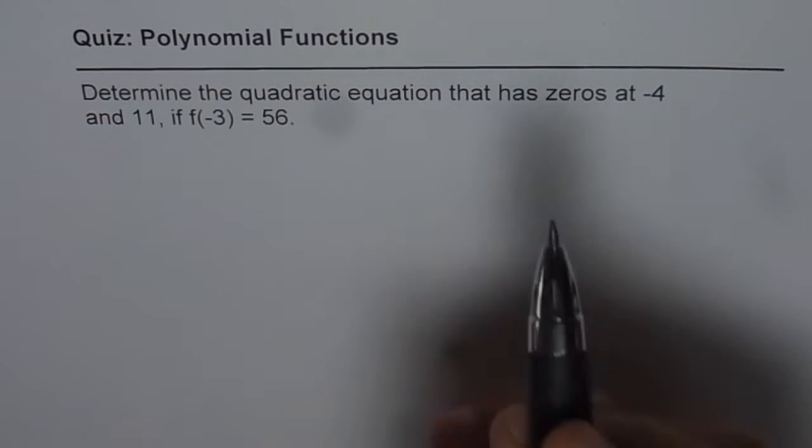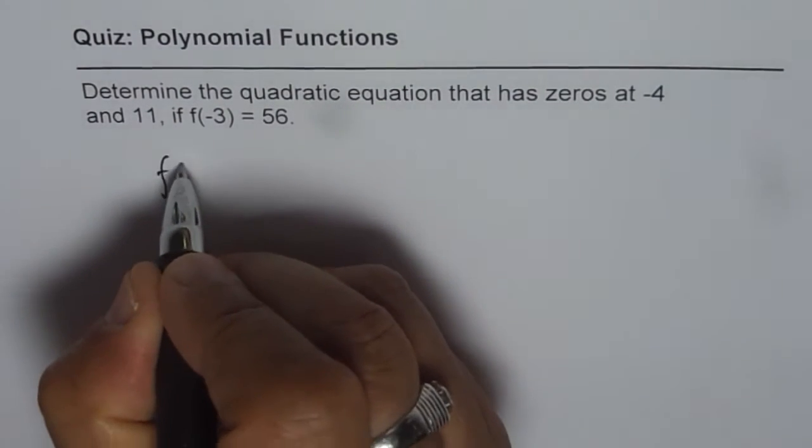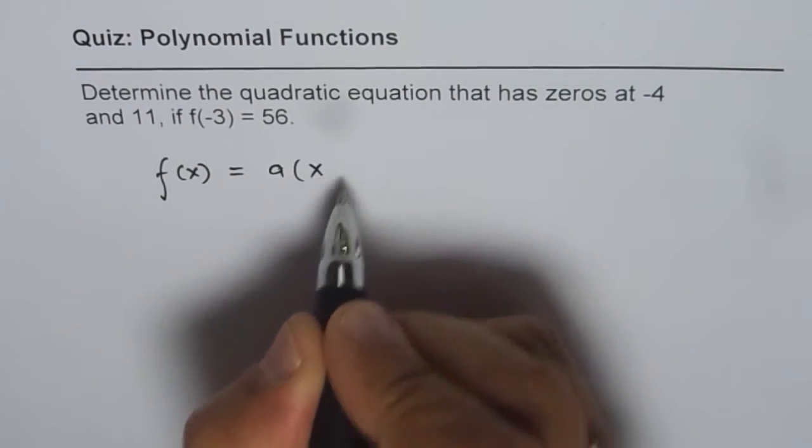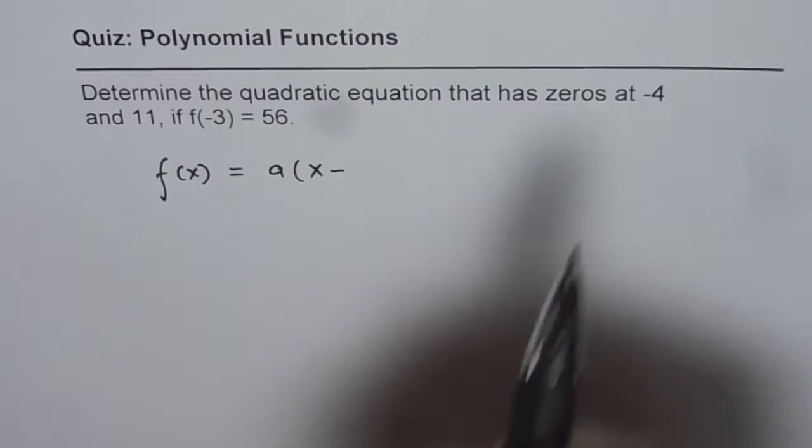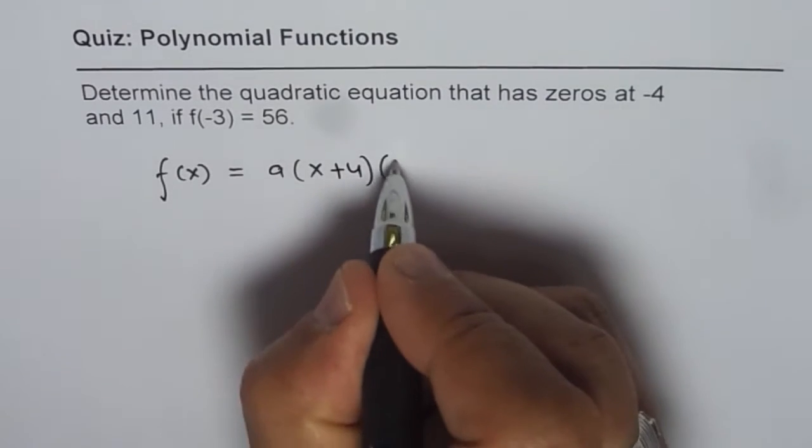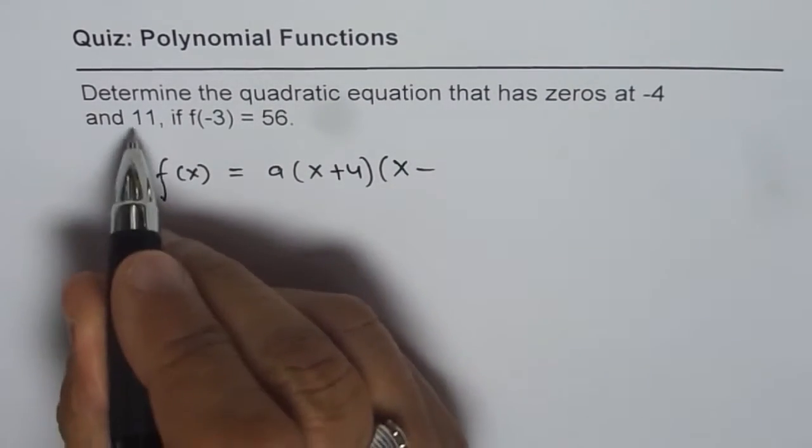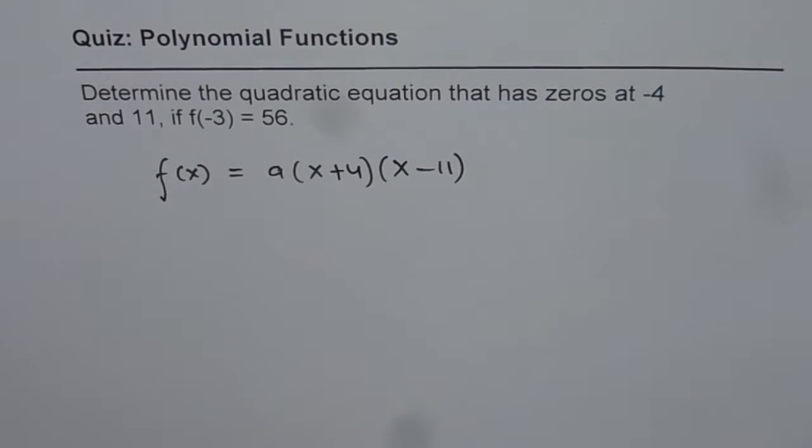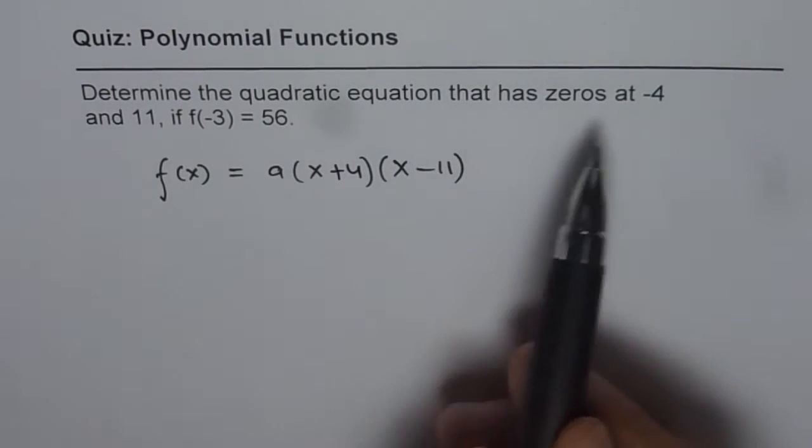Let us say that the quadratic function is f(x). Then f(x) should be equals to a times x minus one of these zeros, which is -4, so it becomes plus 4, times x minus the other one, which is 11. So that becomes the quadratic function satisfying the condition for the zeros.